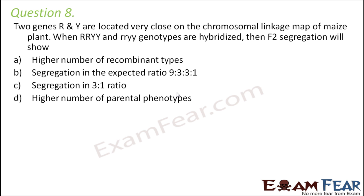Options A and B are not the right options because when two genes are located quite close on the chromosomal map, the recombination possibility reduces. When two genes are linked, the more linked they are, the more the possibility of different combinations reduces. The number of gametes possible from those genes also reduces, and therefore the variety in the next generation also reduces. Since R and Y are quite close on the linkage map, higher number of recombinant types will definitely not happen, and segregation in 9:3:3:1 will also not happen.